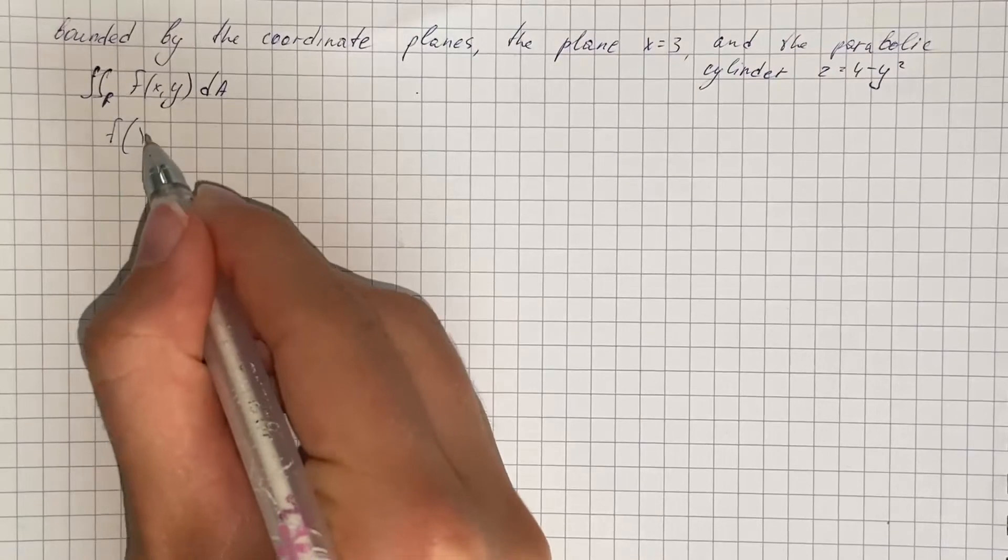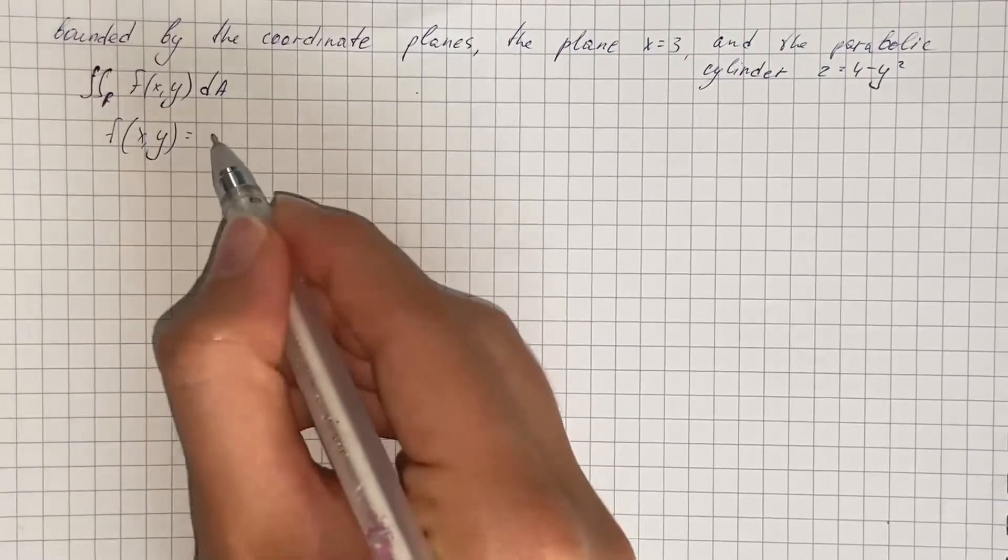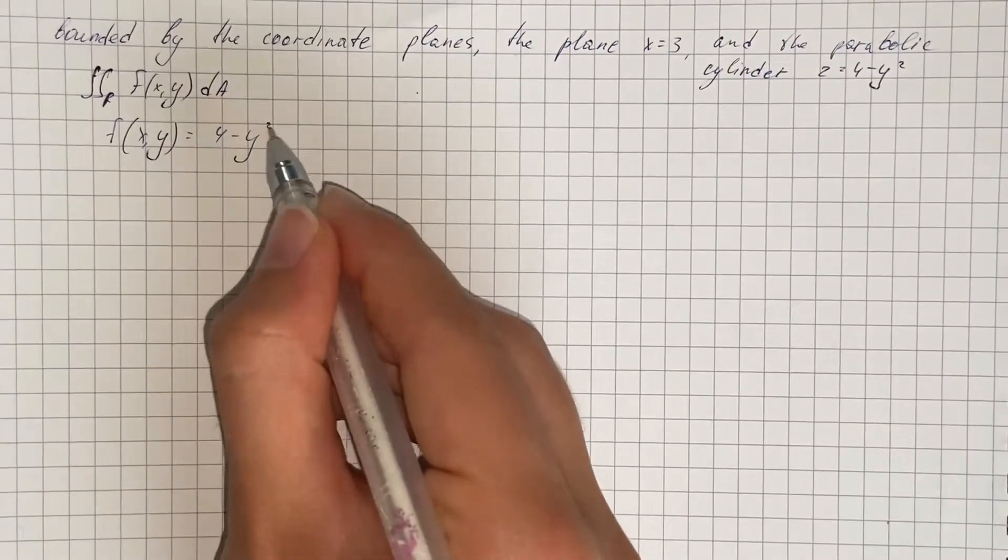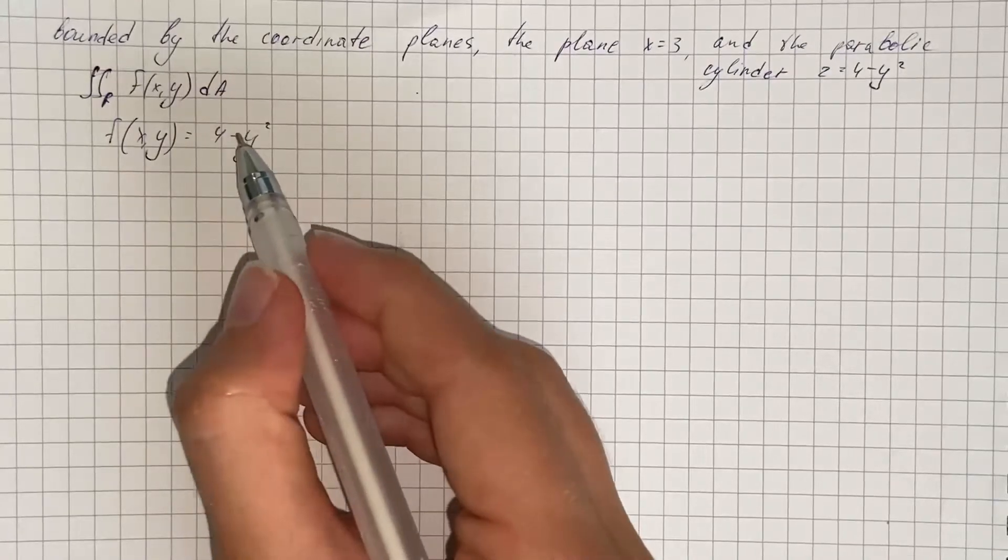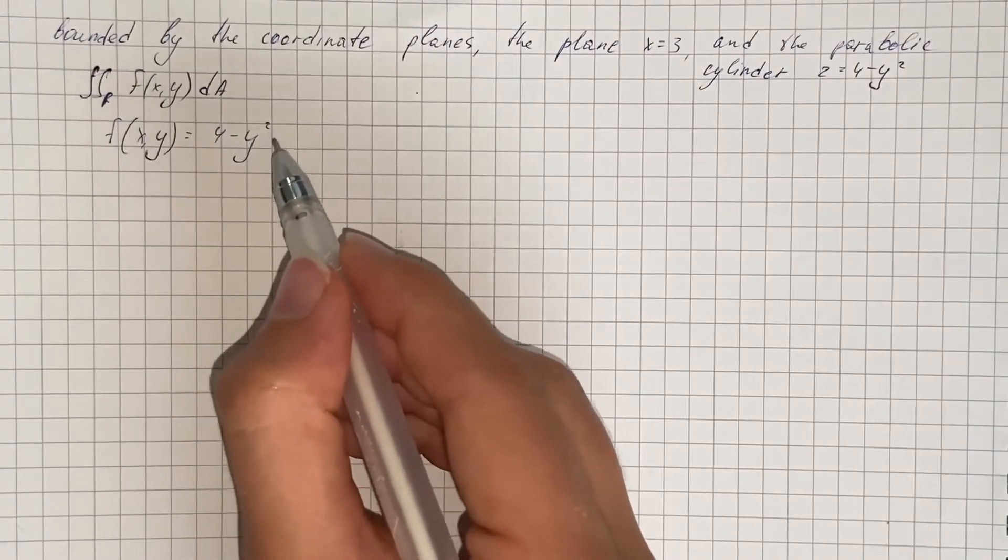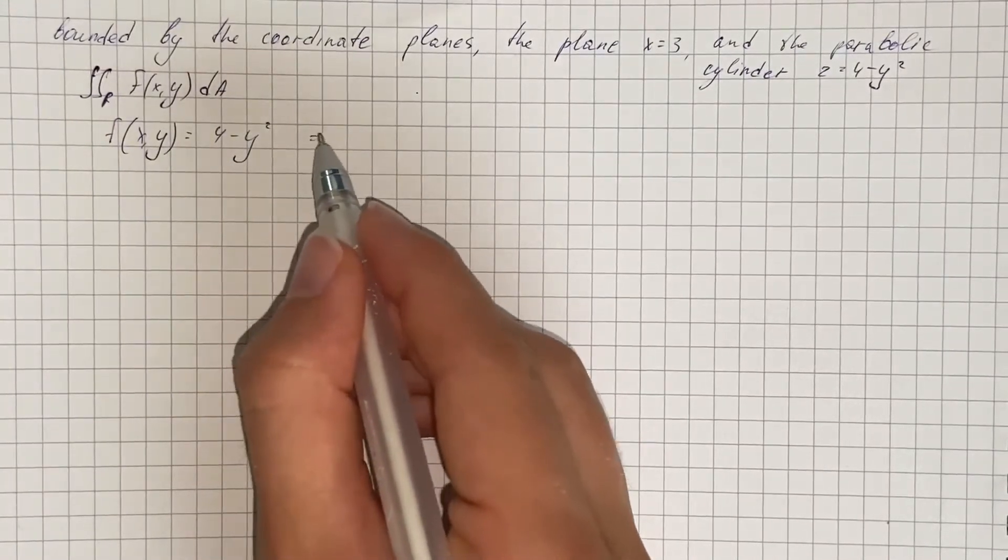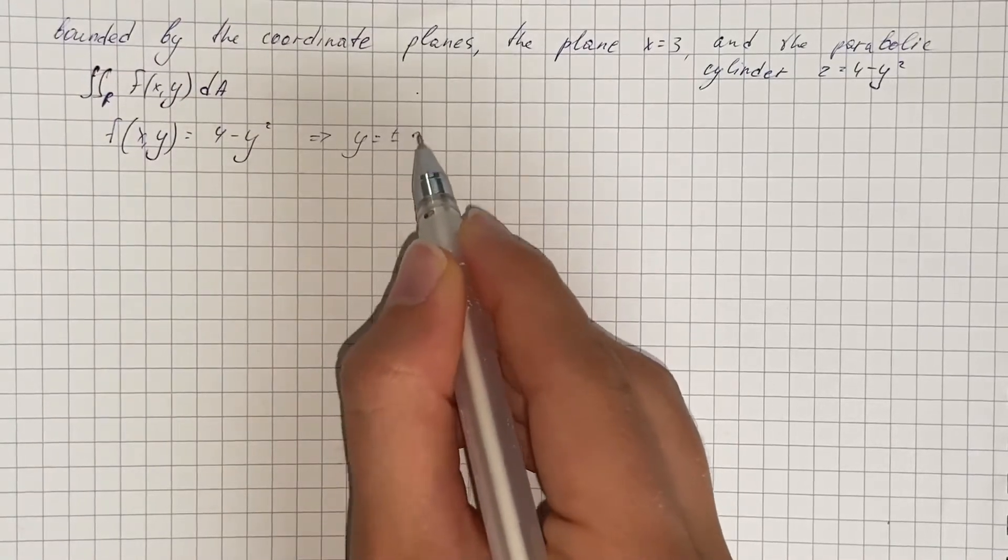So we are given that function f(y) equals 4 minus y squared. So if we set this part 4 minus y squared equal to 0, we get that y equals plus or minus 2.